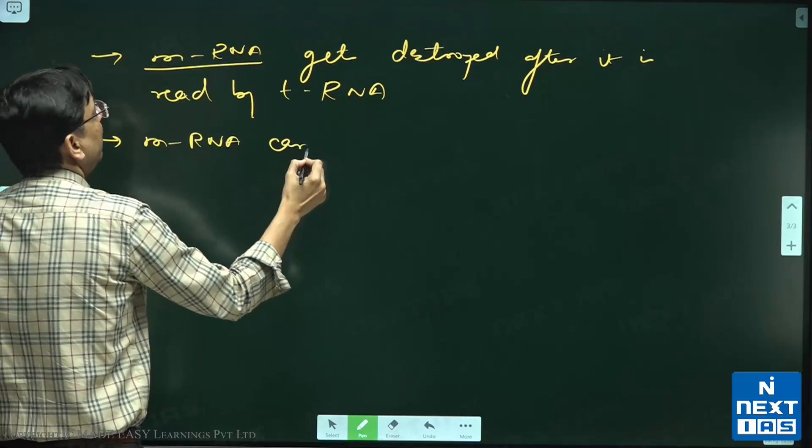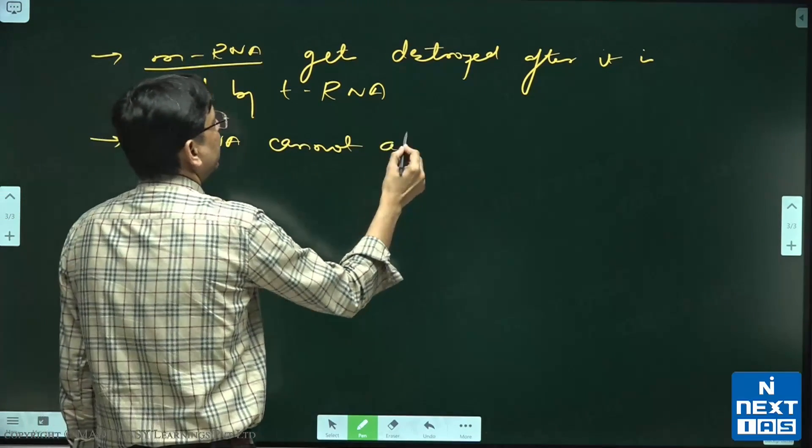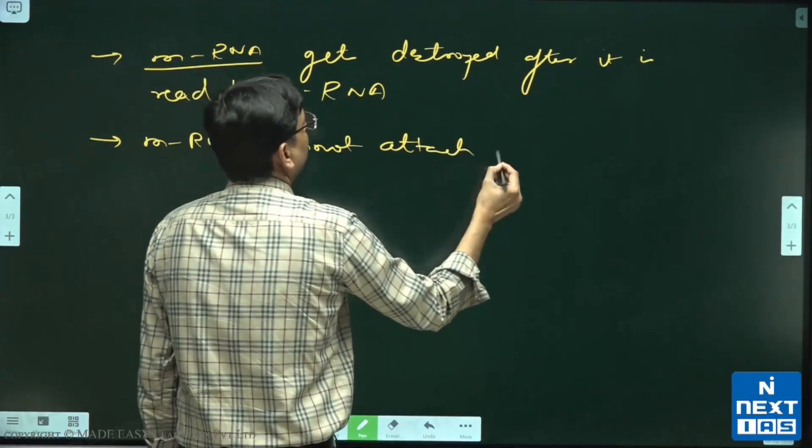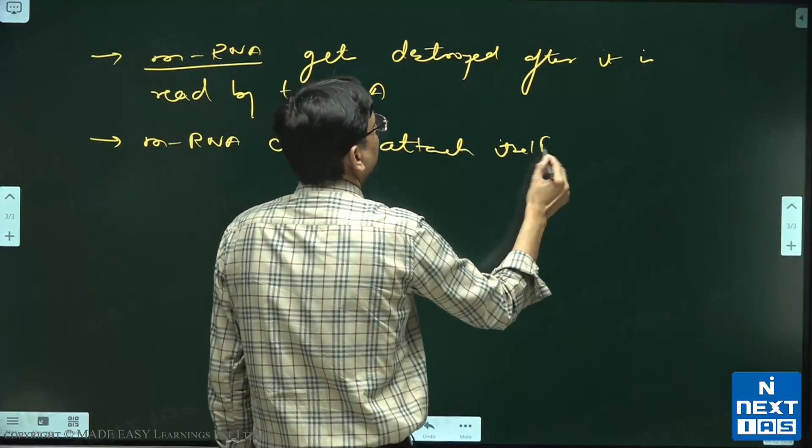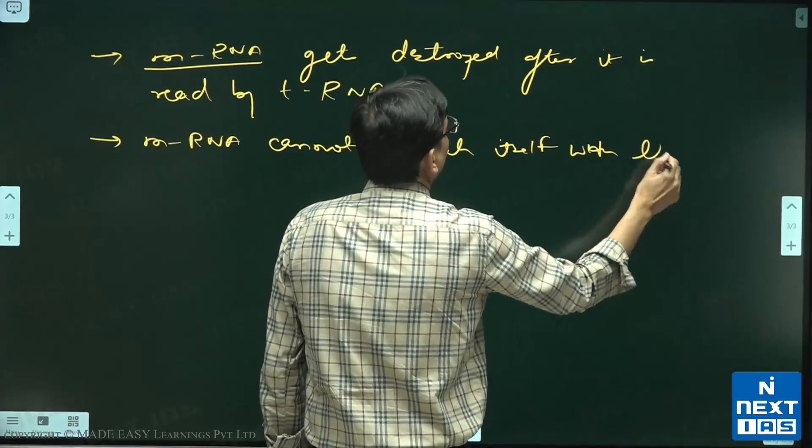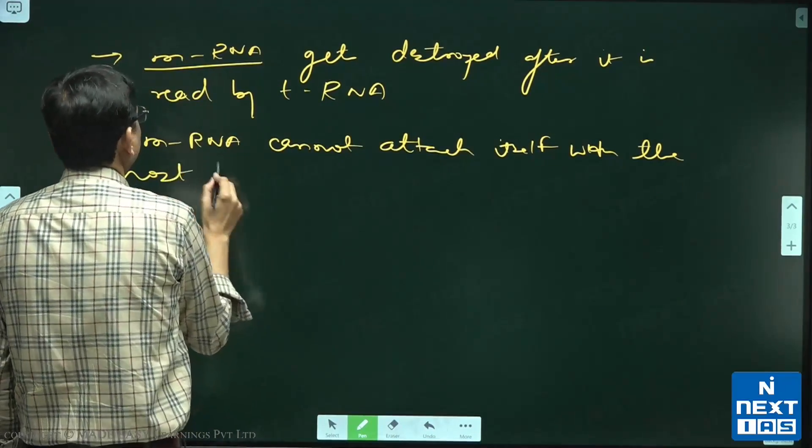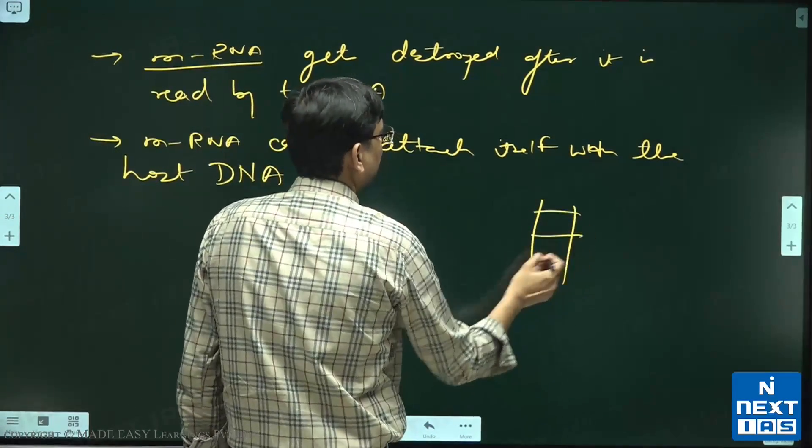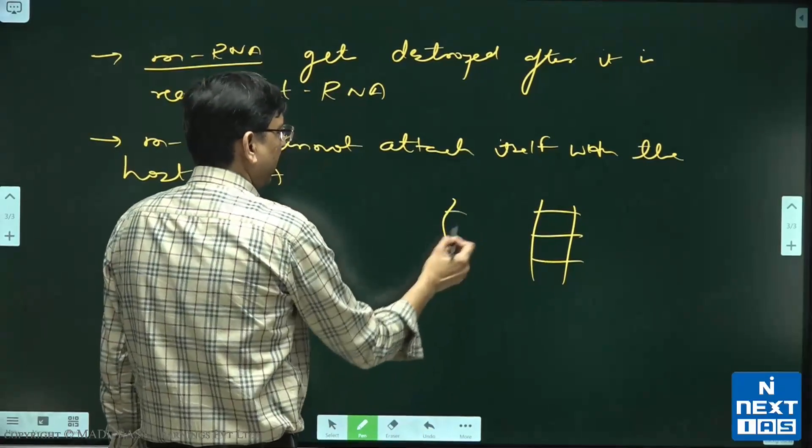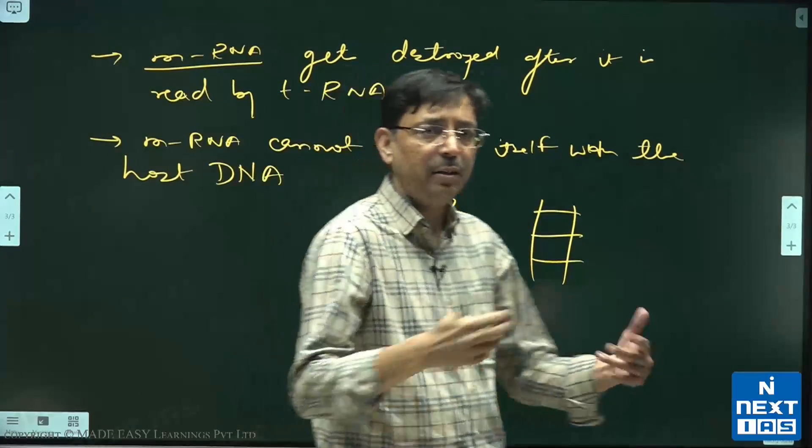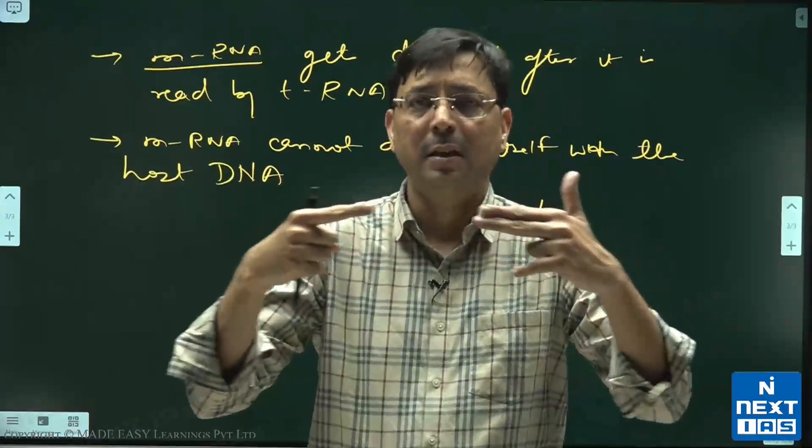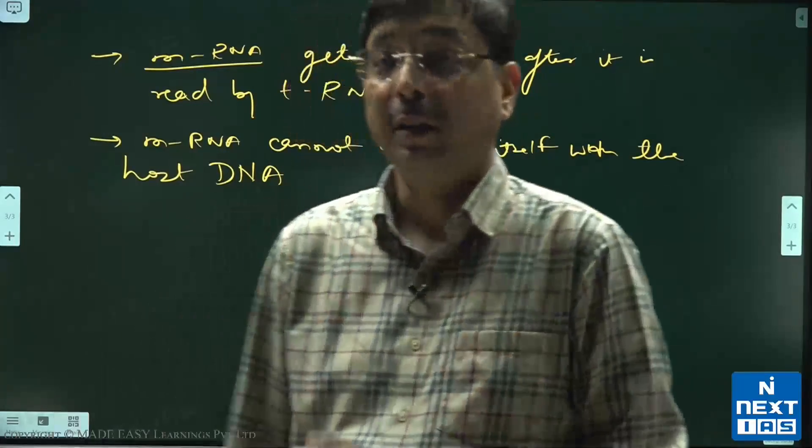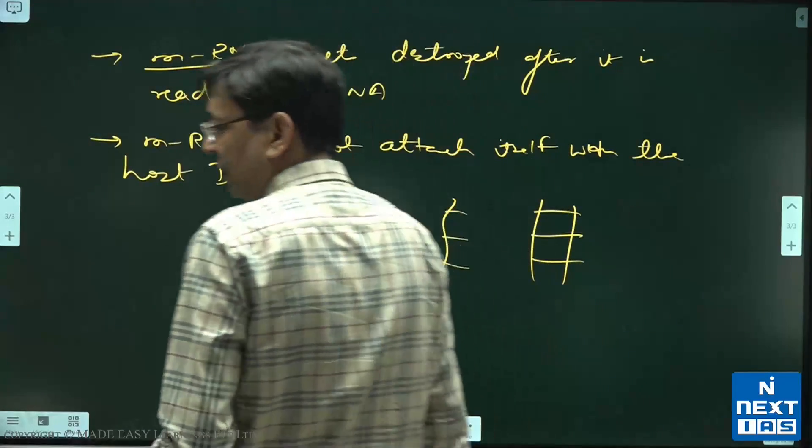mRNA cannot attach itself with the host DNA. You all know DNA is double helical, mRNA or RNA is single helical. They cannot attach, they cannot pair. But these are certain things we need to know about it.